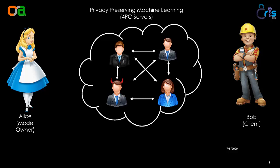To my left I have Alice, who is the model owner, and to my right I have Bob, who is the client. Alice has her trained model parameters which she shares with the MPC, and Bob has his query which he shares with the MPC. He wants the output to his query based on Alice's model parameters. At the end of the MPC computation, he gets the result for his query. Because of the properties of MPC, we can guarantee that nothing about the model parameters is leaked to Bob, and nothing about Bob's query or result is leaked to Alice.